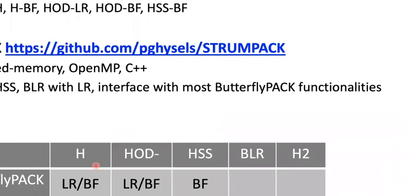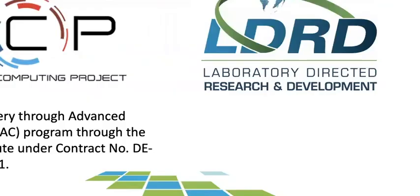Almost all the work mentioned is available in two packages: ButterflyPack and StrongPack. ButterflyPack is a dense solver supporting H, HODBF, HODLR, and HSS Butterfly formats. StrongPack is both a dense and sparse solver supporting HSS and blocking low-rank formats. ButterflyPack can be used inside StrongPack to support a wide range of formats for both dense and sparse linear systems. I'll stop here and am happy to take any questions.